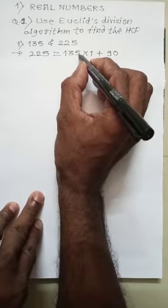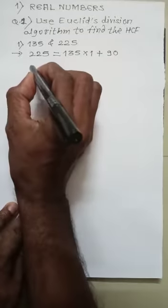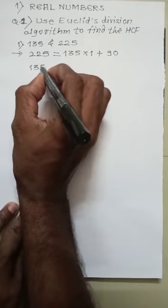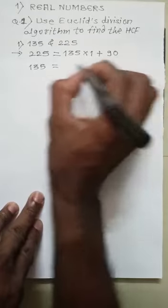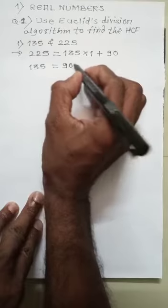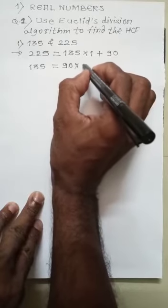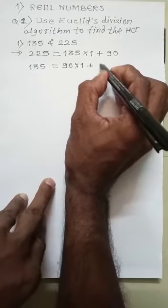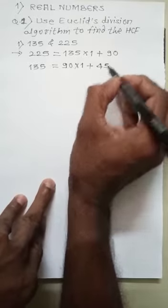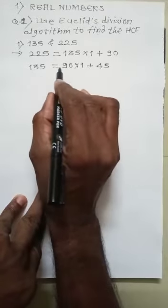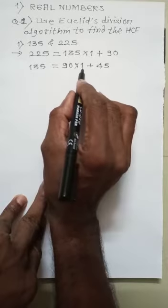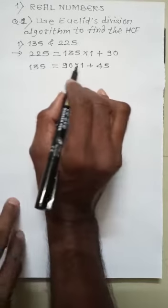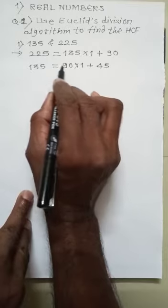135 is our dividend and 90 is our divisor. 90 into 1 is 90 plus 45. The dividend equals divisor times quotient plus remainder. So 135 is not completely divisible by 90 because the remainder is 45.